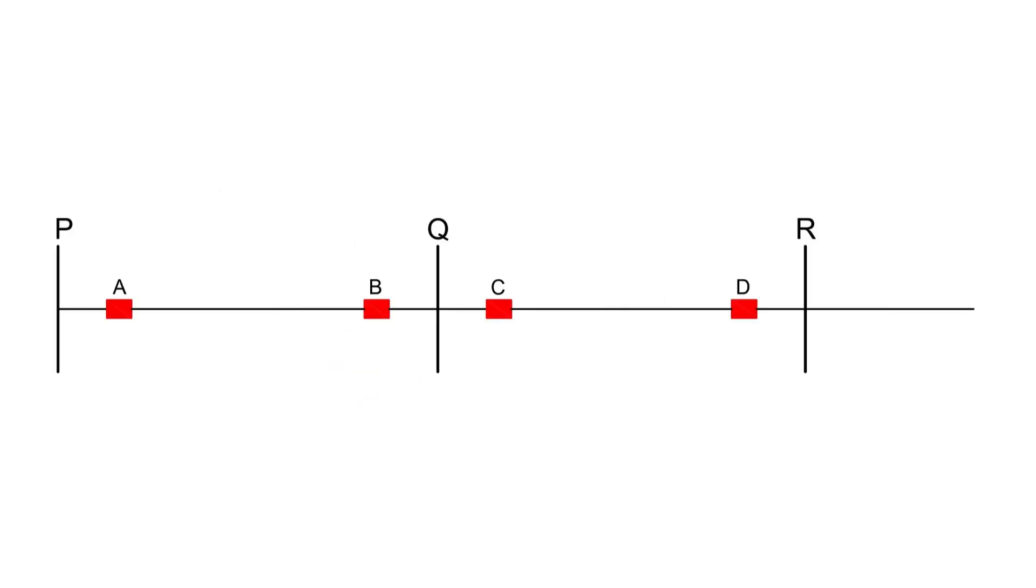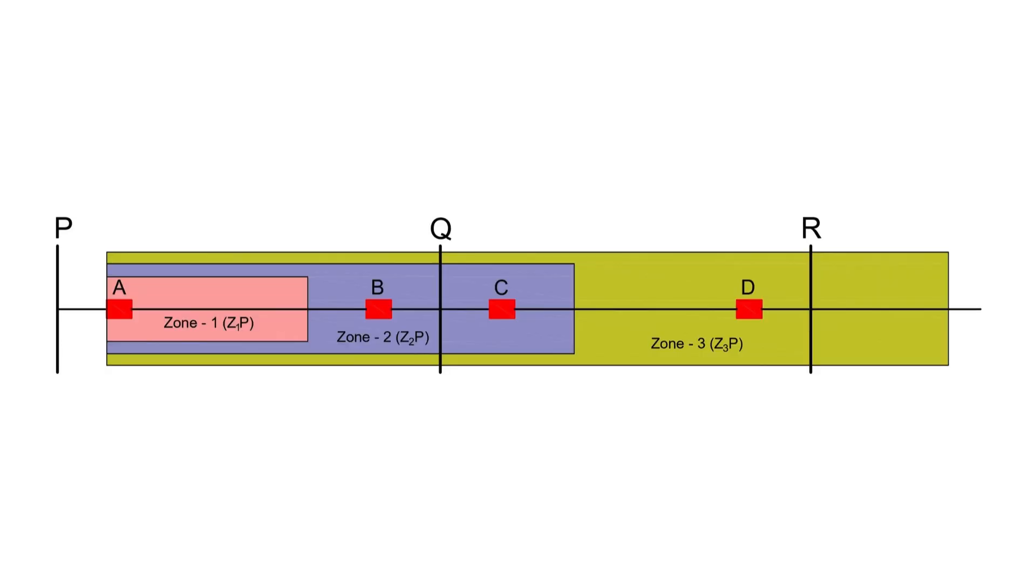In this figure, there are three substations, P, Q, and R, and four breakers, A, B, C, and D. The distance protection for substation P is divided into three zones, Z1P, Z2P, and Z3P. Similarly, substation R will have zones Z1R, Z2R, and Z3R.